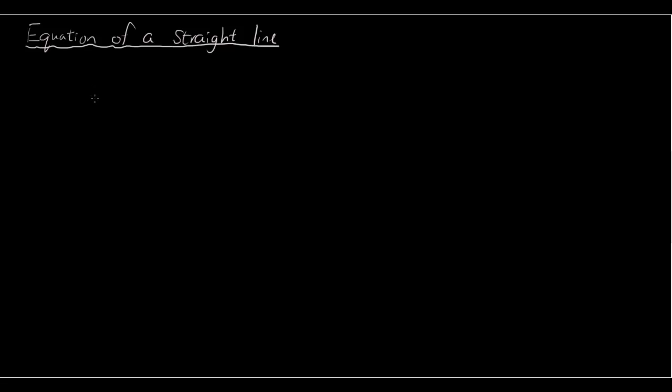Hey guys, welcome to another math lesson on algebra. Last lesson you guys learned about how to draw the graph of an equation. And today we're going to analyze the different aspects of a straight line equation, and also we're going to show you that given a straight line, how you can go backwards and find out the equation for it.